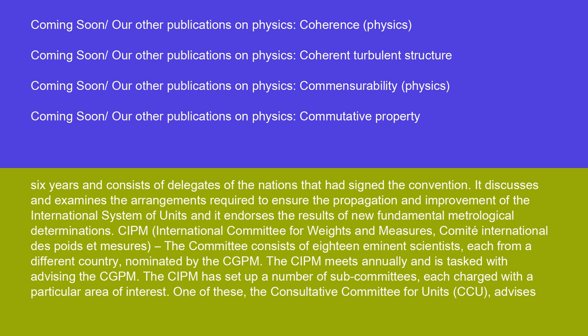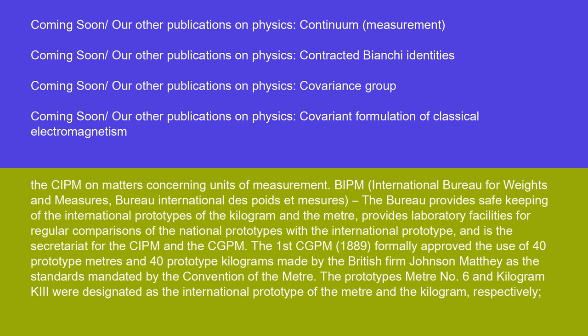The CIPM (International Committee for Weights and Measures) consists of 18 eminent scientists, each from a different country, nominated by the CGPM. The CIPM meets annually and is tasked with advising the CGPM. The CIPM has set up a number of subcommittees, each charged with a particular area of interest. One of these, the Consultative Committee for Units (CCU), advises the CIPM on matters concerning units of measurement.